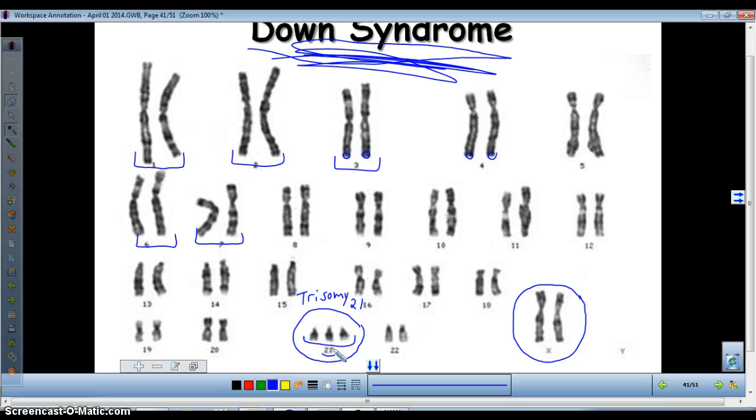The way you use karyotypes is you look at the chromosomes. If you find any abnormalities like trisomy, you can have trisomy 21, you can have trisomy 13, and you can also tell the gender of the individual based on looking at their sex chromosomes.